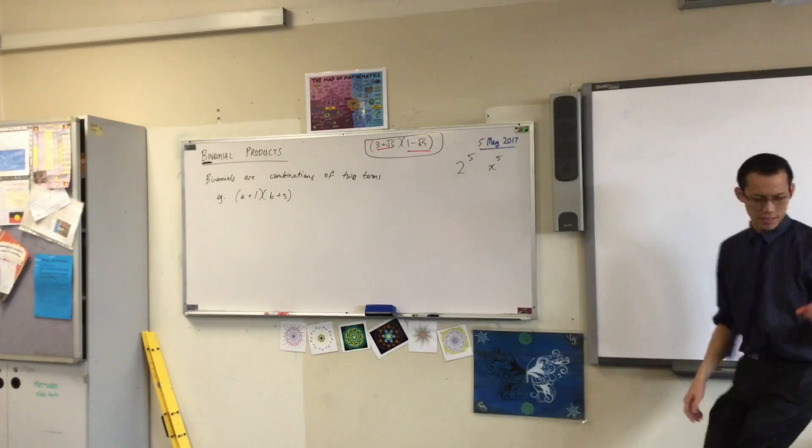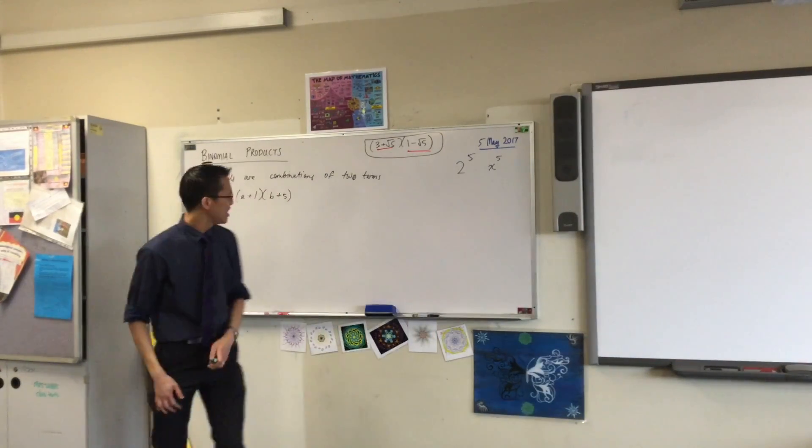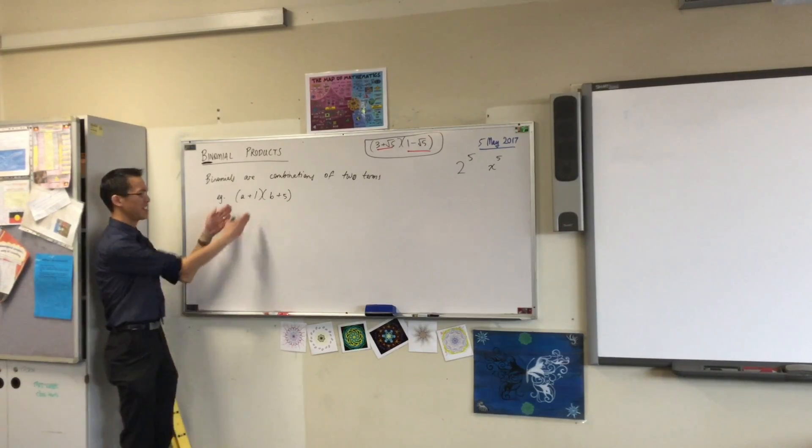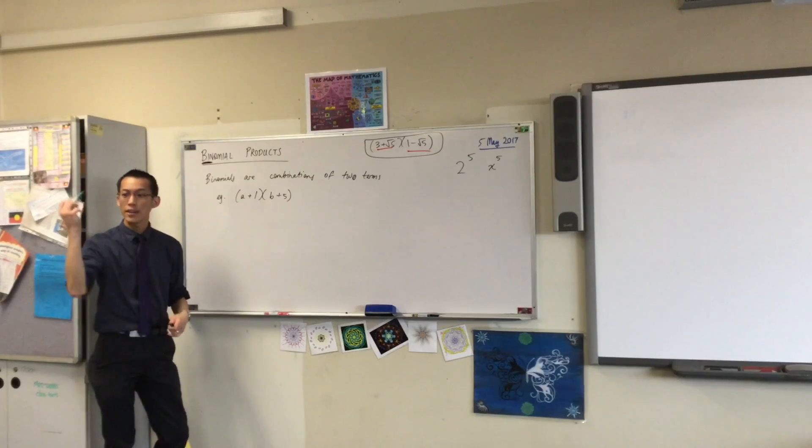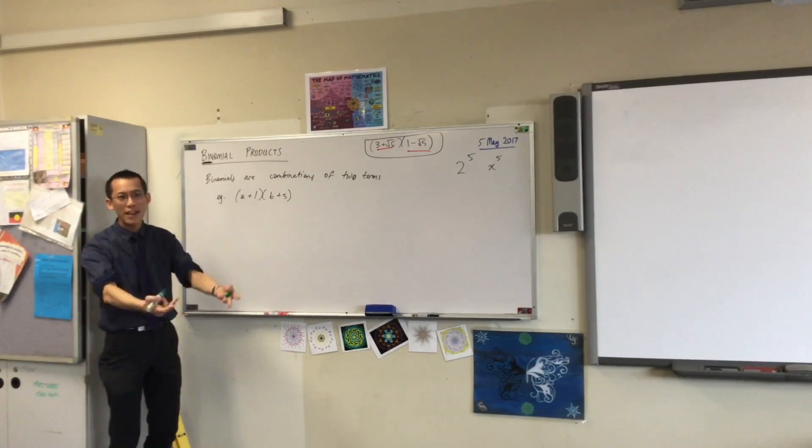We have something times something else. This is just like the expanding and factorizing we were doing last lesson, except it's just a little more difficult because both of these things are binomials. Okay? If you have another color there, in fact, if you have two more colors, I want to remind you of how we do this.